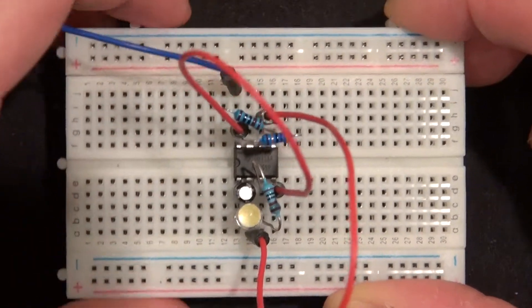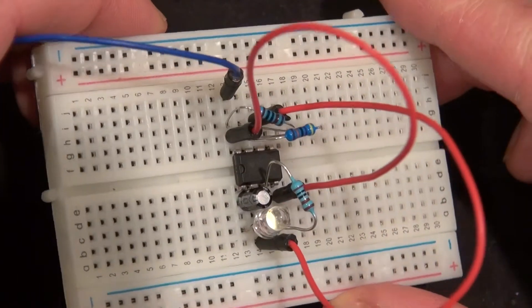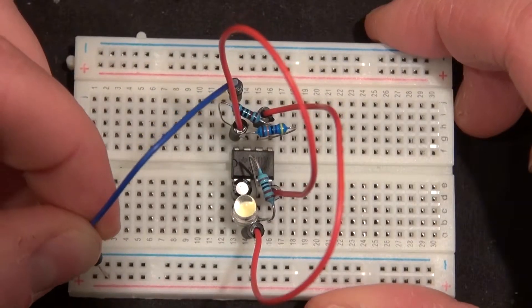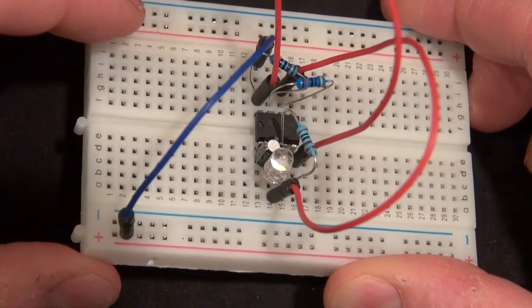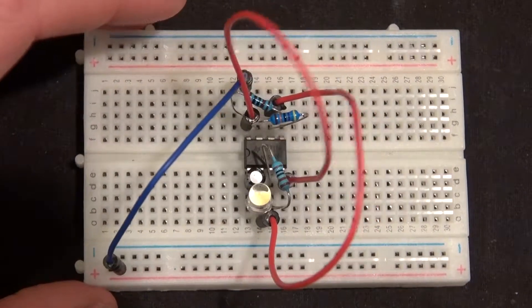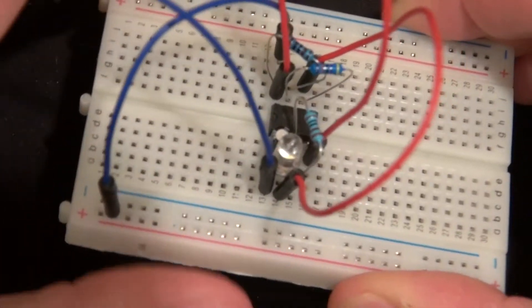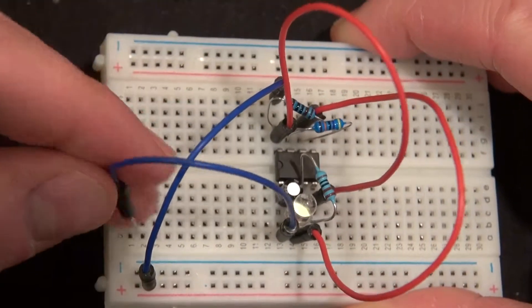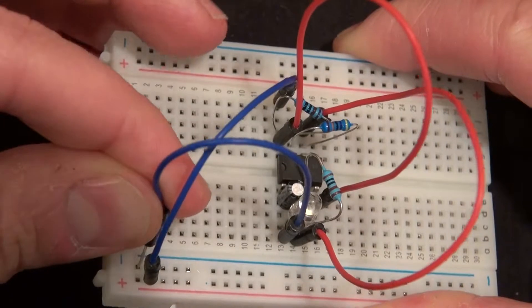Now connect pin 8 to a jumper cable and that will connect to the positive rail. Pin 8 is positive and pin 1 is negative. Now connect the jumper cable to pin 1. Connect it to the negative rail.